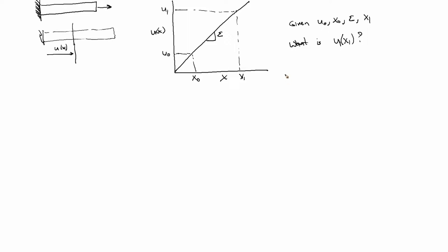So u1 is equal to epsilon x1 minus x0 plus u0, and then I'm just going to define a new variable. I'm going to define a new variable h, that's x1 minus x0.